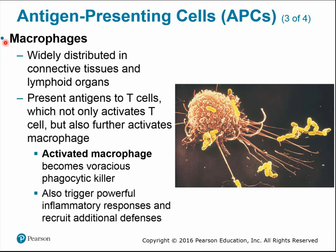Macrophages are also part of the innate second line of defense — widely distributed phagocytes in connective tissues and lymphoid organs. They present antigens to T cells, which can activate the macrophage, dramatically increasing its phagocytic appetite so it becomes a voracious killer. Activated macrophages can also trigger inflammatory responses and recruit additional defenses, calling for backup depending on the severity of the infection.